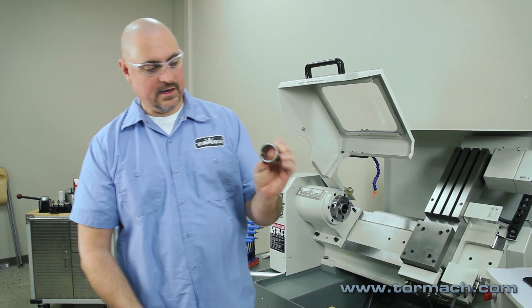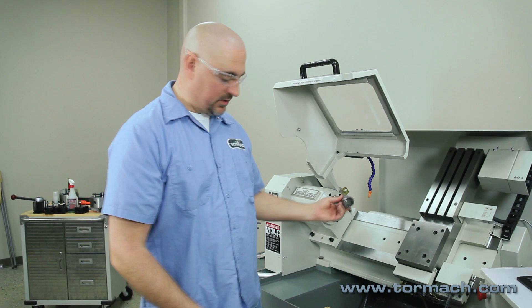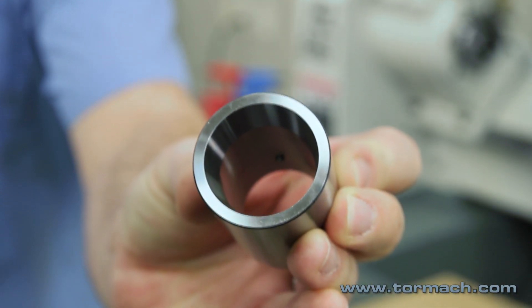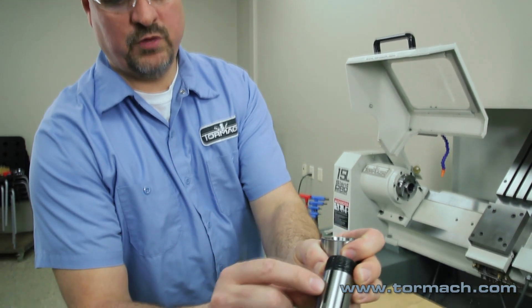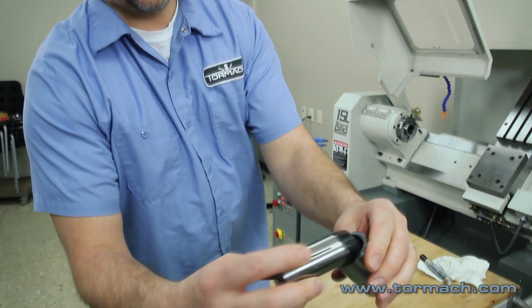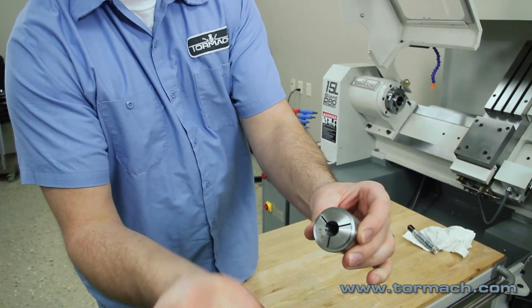This is the 5C collet adapter, goes in the spindle nose of the chuck. It's got a key in it. That's going to be what locates on your 5C collets. Slides in, locates off the key.